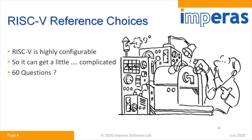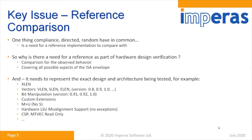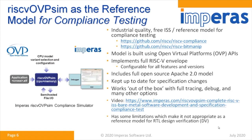One of the big challenges is that RISC-V is highly configurable, so it gets very complicated with many options you can select. One of the key things that's very important is that you have a high quality reference and you compare the reference against your design. You have to make sure things are configured to be exactly the same, and it doesn't matter whether you're doing directed testing or random testing — you need a good quality reference.